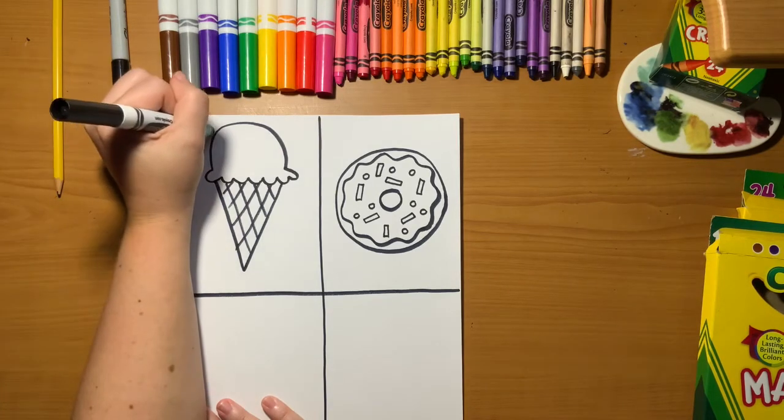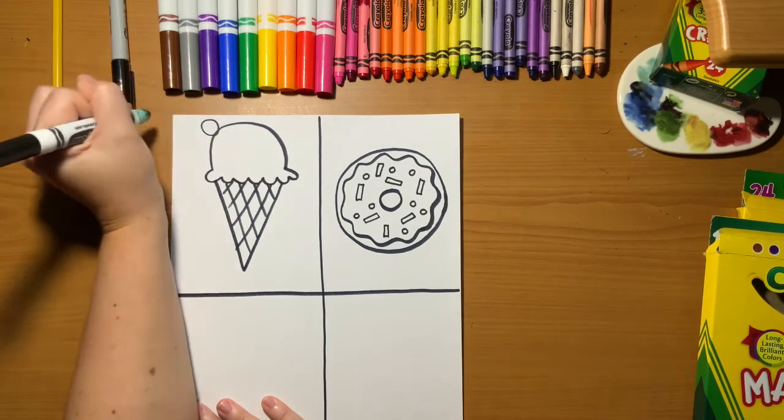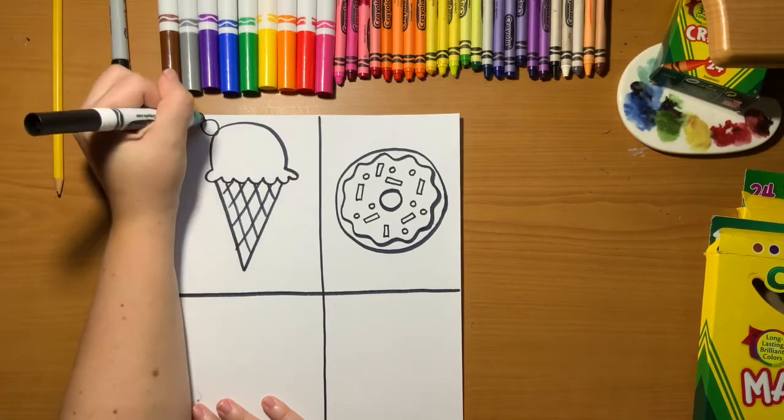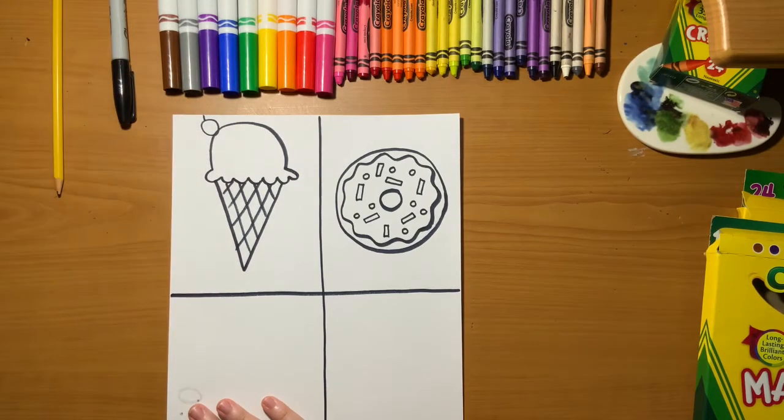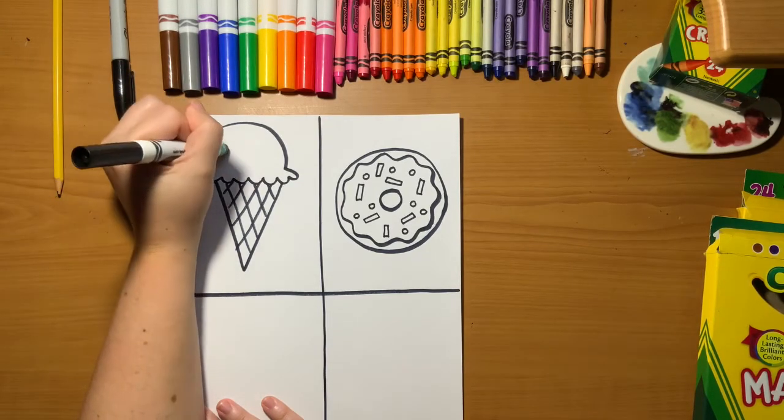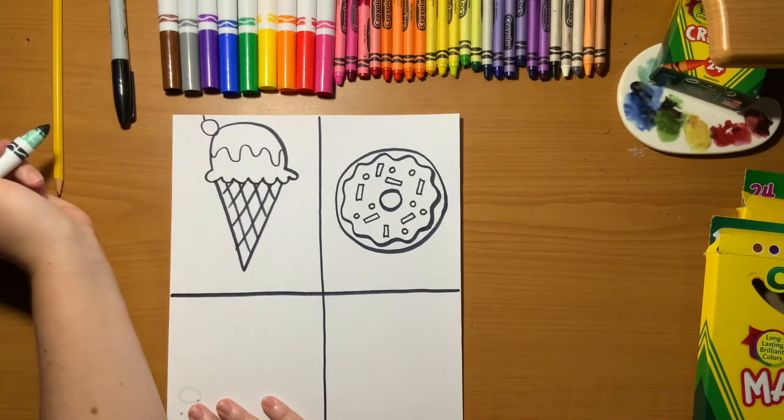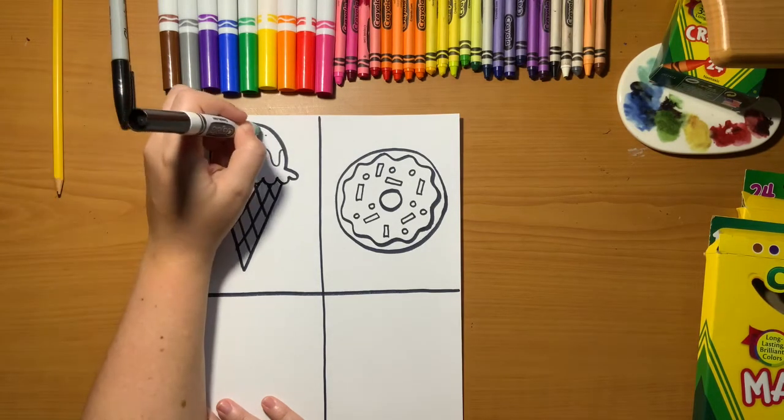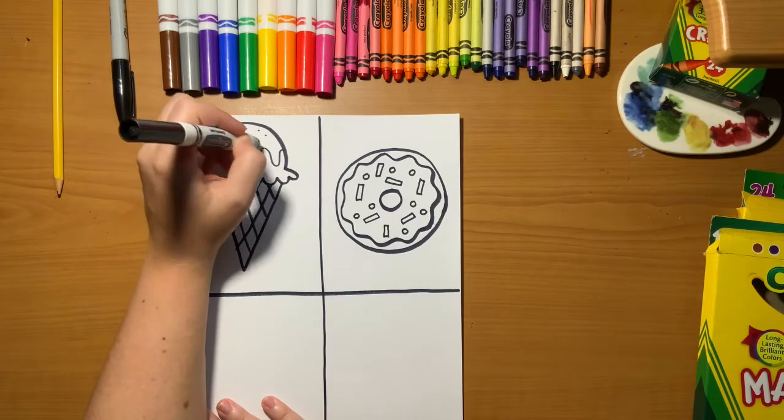If you want to add anything extra to your ice cream cone like a cherry or maybe a squiggly line for some hot fudge on the top, that's totally up to you. You can also add sprinkles if you want to. This is your drawing. You're the artist. You get to decide.